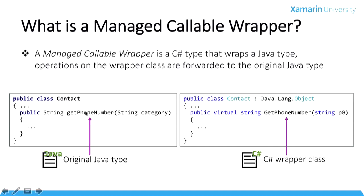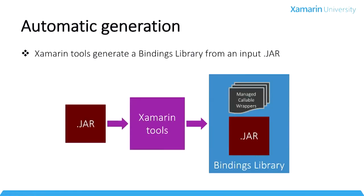Managed callable wrappers are the C# code that you use in your Xamarin Android app that then forwards your calls through JNI to the underlying jar file. For example, in the original Java code I have a class called Contact with a method inside it. The Xamarin tooling generates a C# Contact class with the matching method. Your code calls the C# get phone number method, and inside the implementation JNI forwards the call to the original Java. Xamarin tooling does a lot of this work for you.